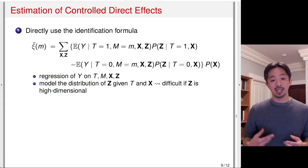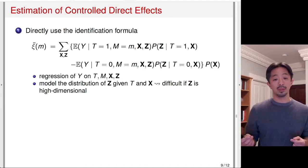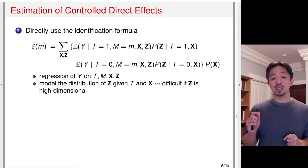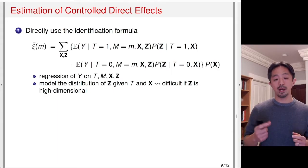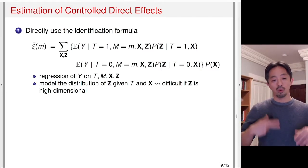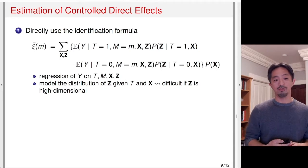Once you have those two models, the identification formula suggests the following estimation procedure. First, you predict Z, the post-treatment confounder, given T and X, with T set equal to 1. You plug that predicted Z into the regression function while setting T still equal to 1. You repeat the same thing except T is set to 0, and then take the difference between those two computed quantities. Once you have that, you average over the distribution of X, which is typically done by taking the sample average. You do this for each observation, compute the difference, take the sample average, and use that as an estimate of the control-directed effect.